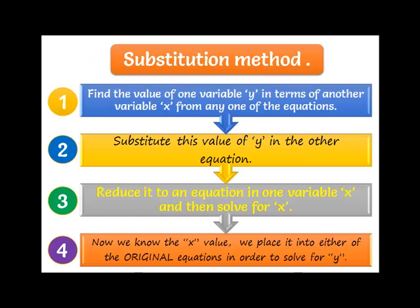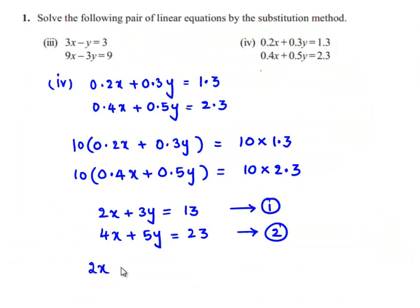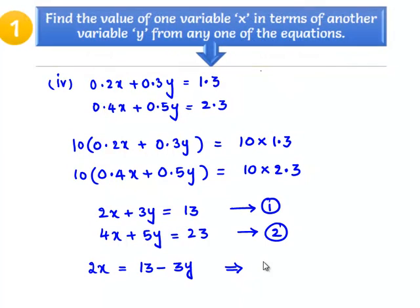Now, the first equation can be written as 2x = 13 - 3y. That implies x = (13 - 3y) / 2.